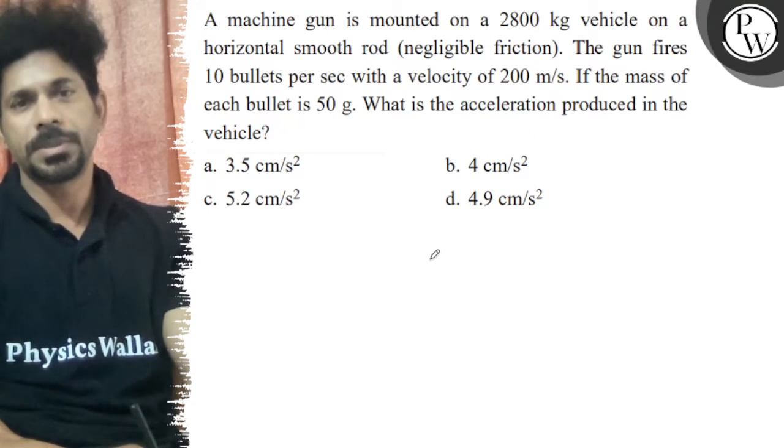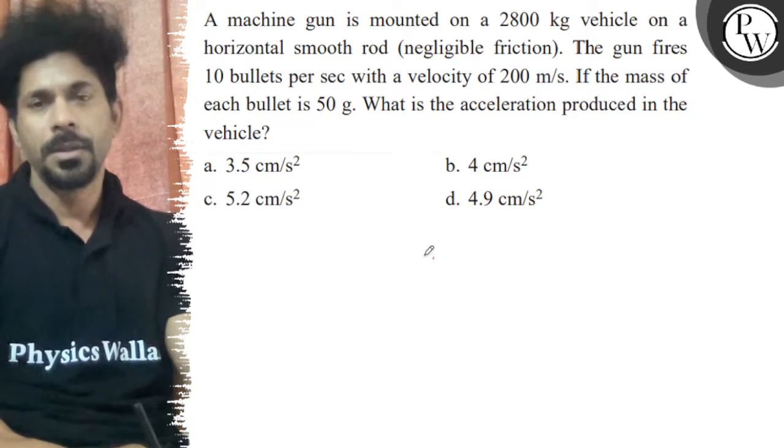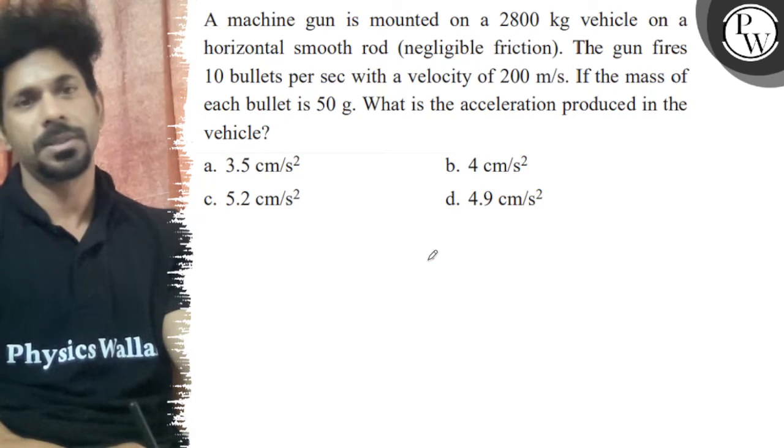The gun fires 10 bullets per second with a velocity of 200 meter per second. If the mass of each bullet is 50 gram, what is the acceleration produced in the vehicle?